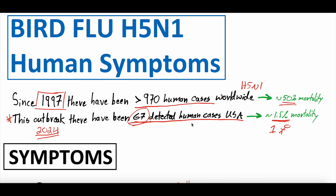Bird flu H5N1, just like any virus, mutates. And for the first time ever, we are seeing bird flu in cows. It's been around since 1997, but we've never seen it jump into cows until now. We're seeing it in cows and it seems like it's causing less severe disease in humans. Because of that, we wanted to dive into what symptoms this particular outbreak of bird flu is causing in humans, because it seems different than the more traditional cases.